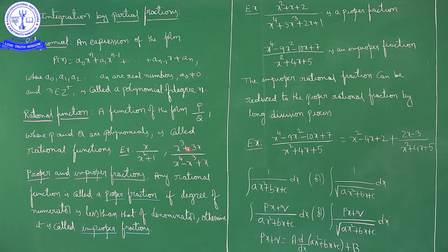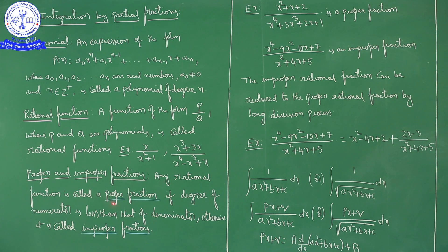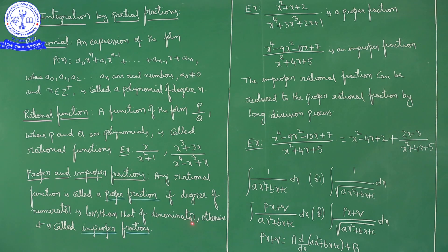Here, a cubic polynomial over a biquadratic polynomial — numerator is a polynomial, denominator is a polynomial — so this function is called a rational function. A rational function is a proper fraction if the degree of the numerator is less than the degree of the denominator; otherwise, it is an improper fraction.